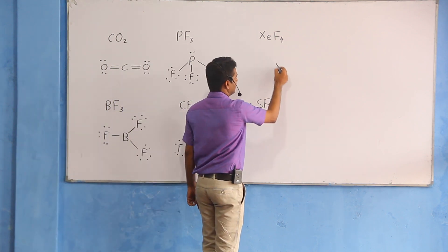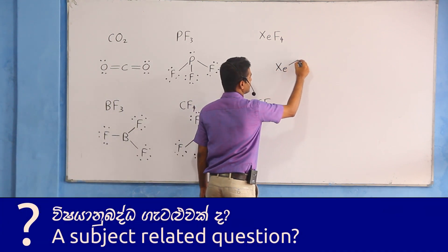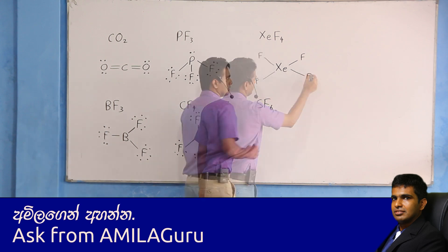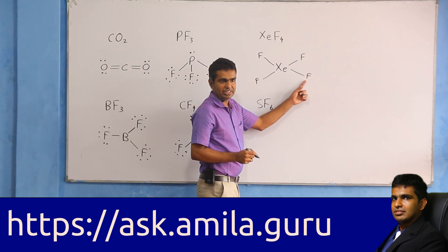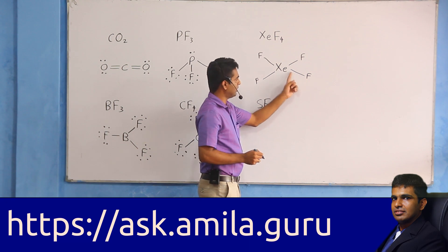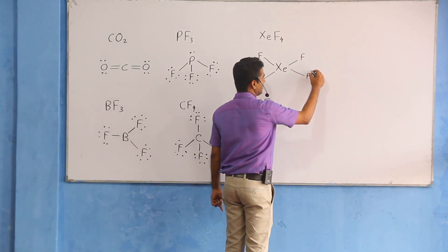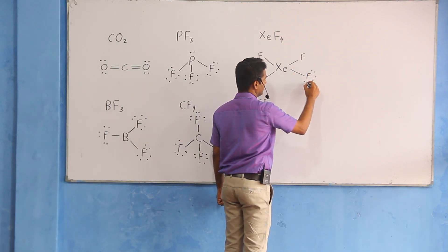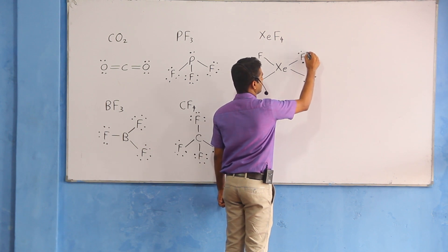XCF4 is the same structure. Fluorine 17, fluorine atom has 4 electrons. The electron count is higher, so the electron is higher. Fluorine atom count is higher.